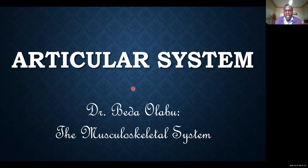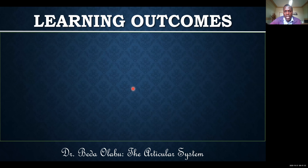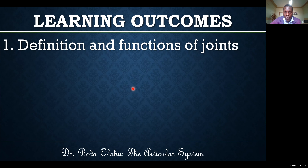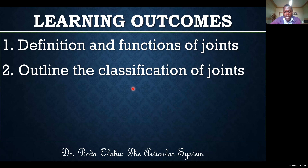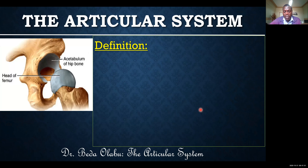In this lecture, let's look at the articular system. We are going to define what joints are and state their role. We are also going to see how we classify joints, and then give examples of the three types of joints: fibrous joints, cartilaginous joints, and synovial joints. It's a pretty straightforward lecture.